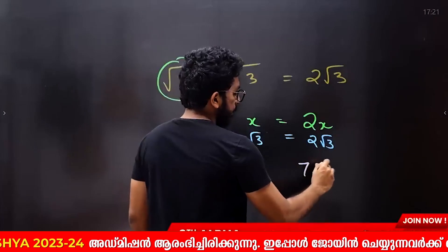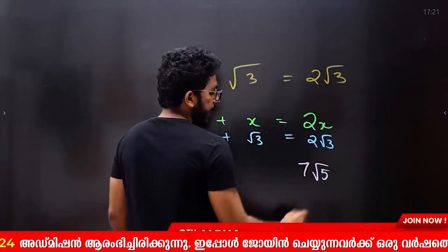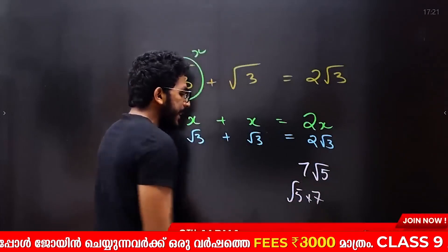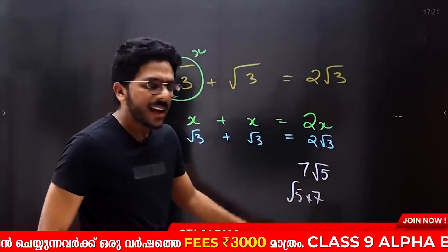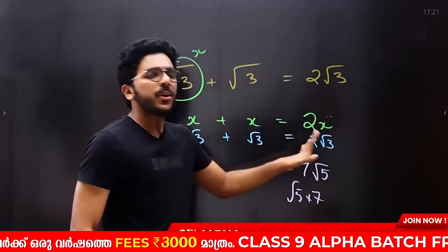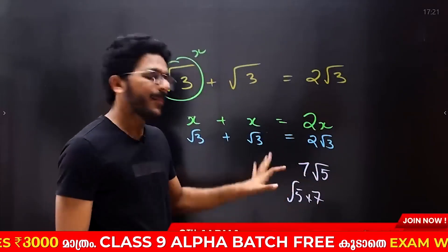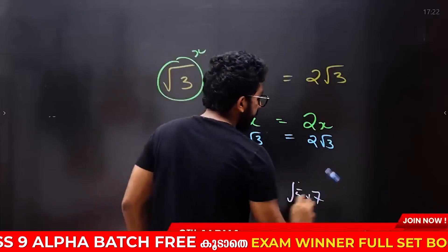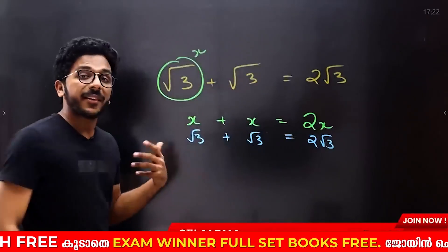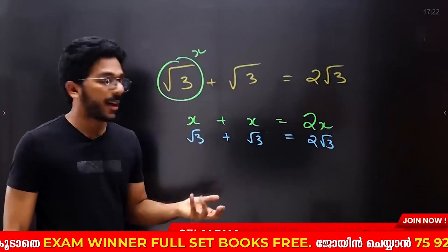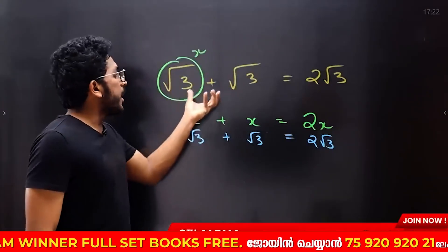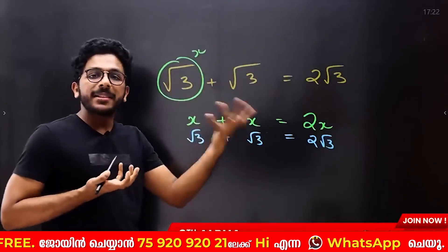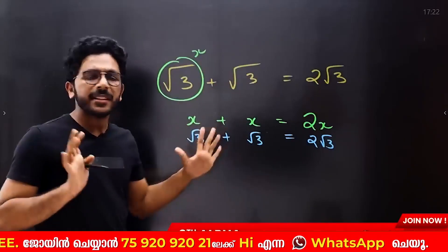Now, we have 7 root 5. You don't multiply root 5 into 7 separately. If we have 7 root 5, it stays as is. This is a very important rule: one root is the same root. One plus two plus two — you can see that.